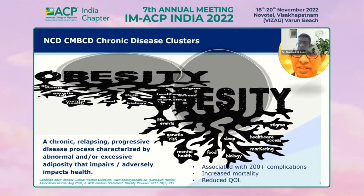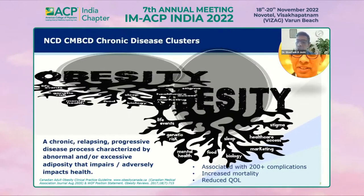Obesity is a chronic, relapsing, progressive disease process characterized by abnormal and/or excessive adiposity which impairs or adversely impacts health. It is chronic, relapsing, and progressive, with abnormal or excessive adipose tissue adversely affecting health. It has several contributing factors like sleep, food, biology, mental health, food marketing, genomic risks, life events, and stigma. It is associated with 200 plus complications, cuts short the lifespan, increases mortality, and impacts quality of life.